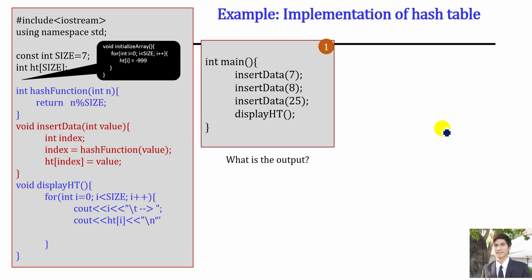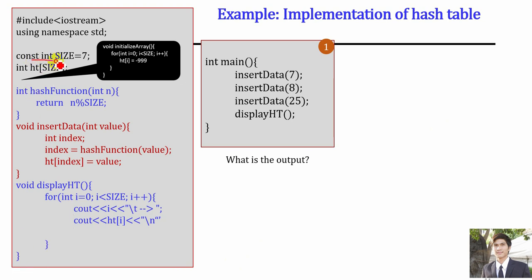This is a basic hash table implementation. You create an array and define how elements are stored — not necessarily from position 0, 1, 2, 3, but depending on the hash function you define. We create an array with size 7 defined as a constant using the keyword 'const', so it can be reused across other functions. If you want to increase the array size later, you just update the constant value here.